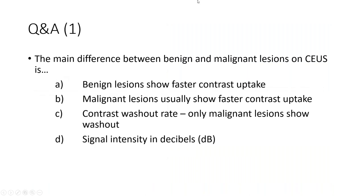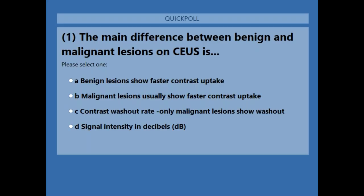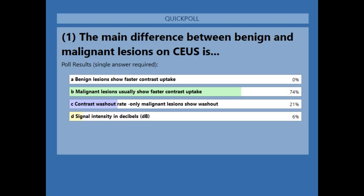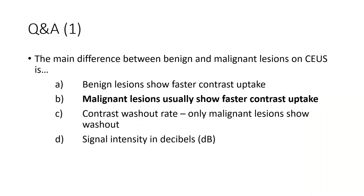For a quick knowledge check: what is the main difference between benign and malignant lesions on contrast-enhanced breast ultrasound? Is it that benign lesions show faster contrast uptake, malignant lesions show faster contrast uptake, contrast washout rate, or signal intensity in decibels? Most of you correctly answered that malignant lesions show faster contrast uptake — this corresponds to the steeper slope of the time-intensity curve in malignant lesions.